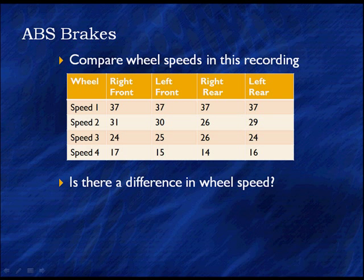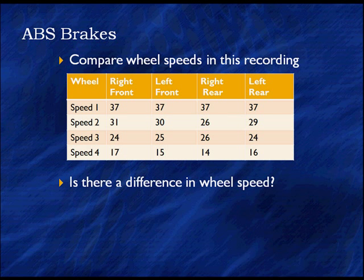The four wheels are right front, left front, right rear, and left rear, with speeds recorded for each. Is there a difference in wheel speed? Take a row and look across an entire row. Wheel speed 1: they all read 37. Wheel speed 2: 31, 30, 26, 29. We've got four different readings, and the 26 is outstanding — noticeably lower than the rest.